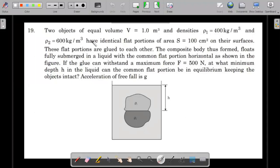Two objects of equal volume V = 1.0 m³ and densities ρ₁ = 400 kg/m³ and ρ₂ = 600 kg/m³ have identical flat portions of surface area S = 100 cm² on their surfaces. These flat portions are glued together. The composite body thus formed floats fully submerged in a liquid with the common flat portion horizontal as shown in the figure.